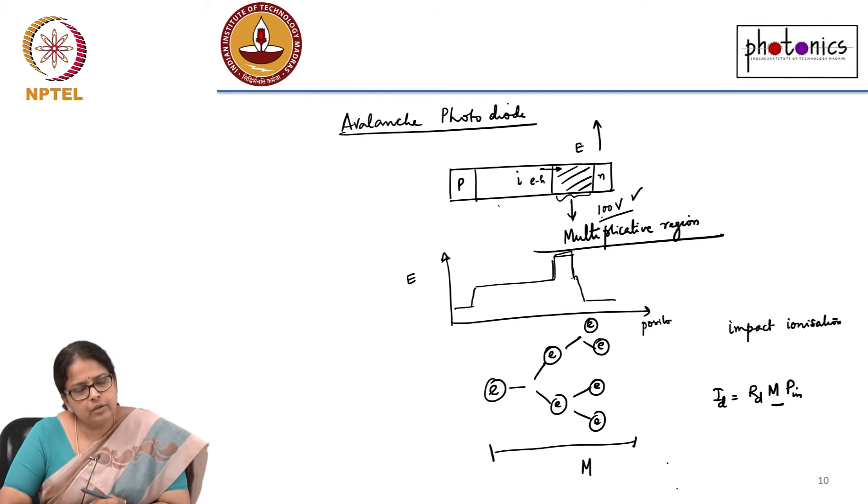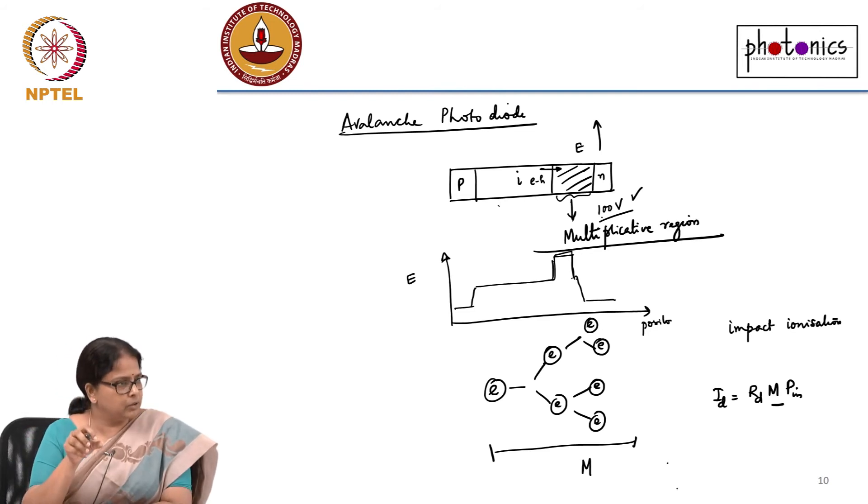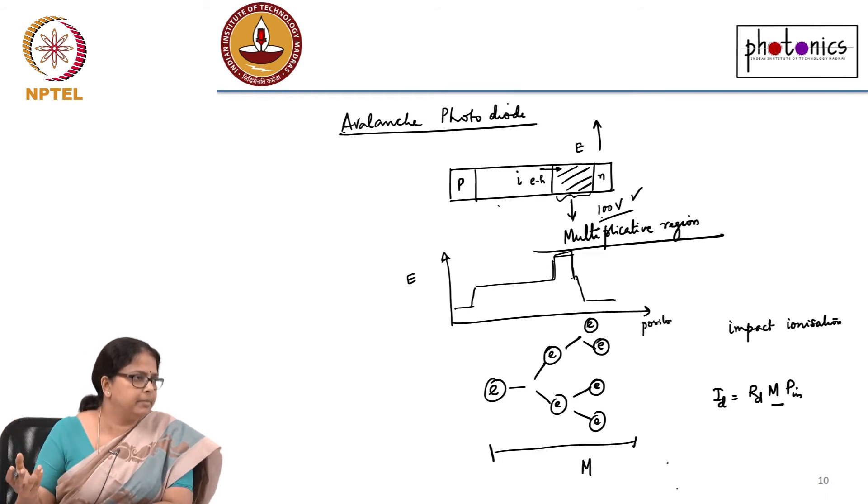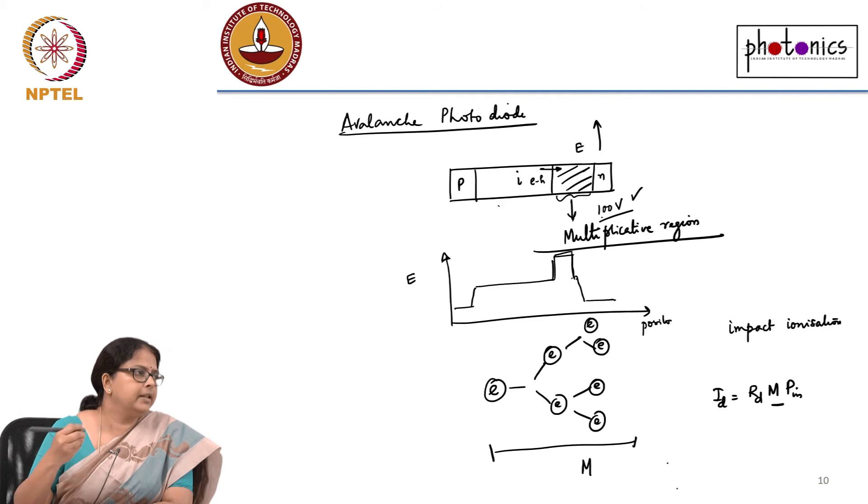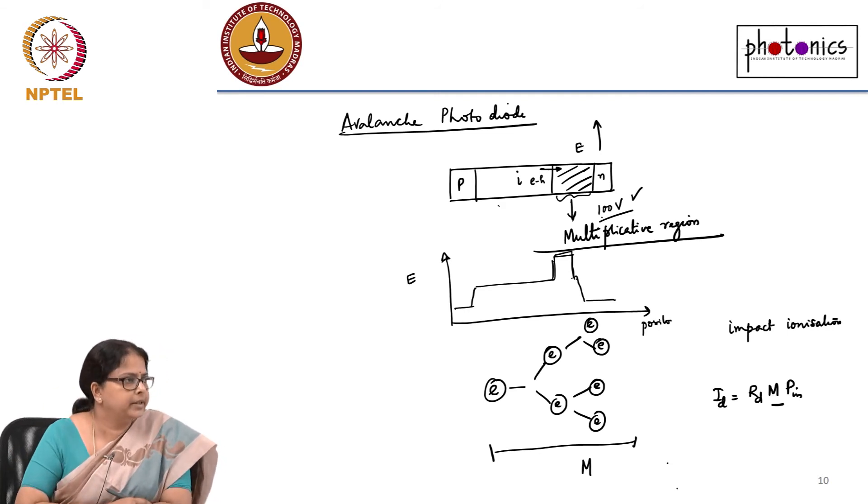Avalanche photodiodes work for small reverse voltages also, but small reverse voltages, this M does not kick in because the energy is not sufficient for it to create impact ionization. You will start seeing the effect of the avalanche gain or multiplication gain if your reverse bias voltage goes to about 100 volt. And this is what people commonly use for single photon detection.